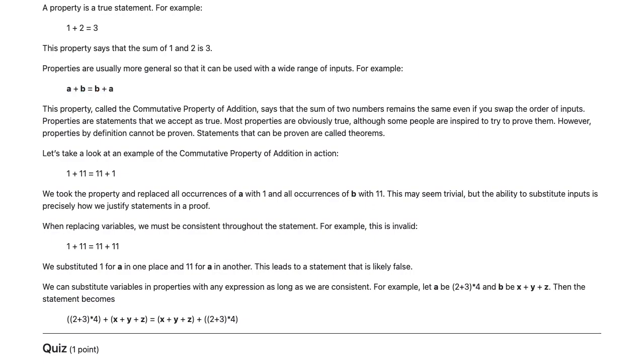Let's take a look at an example of the commutative property of addition in action. It says 1 plus 11 equals 11 plus 1. We took the property and replaced all occurrences of a with 1 and all occurrences of b with 11. This may seem trivial, but the ability to substitute inputs is precisely how we justify statements in a proof.